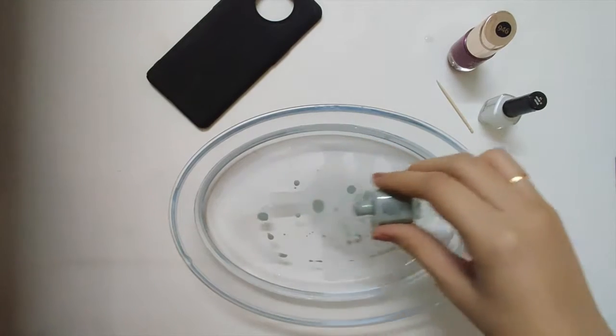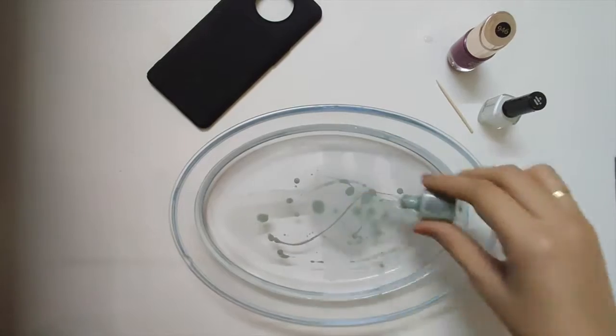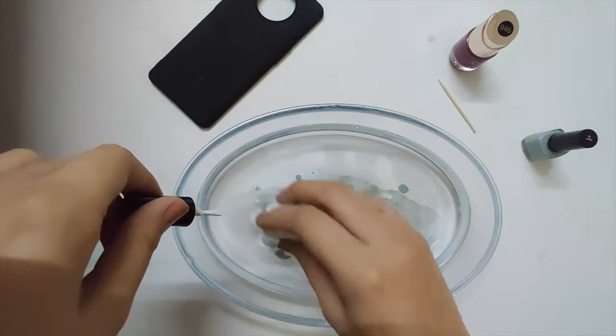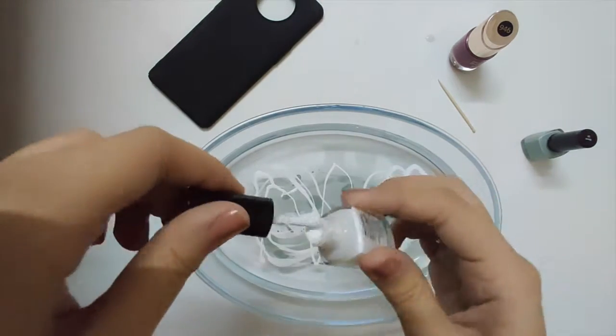Now we need to pour our nail paints on the water one by one. Be sure to be gentle with the nail paints because if you jerk your nail paints, the color will probably sink to the bottom and we want a pattern to actually float on top of the water surface.